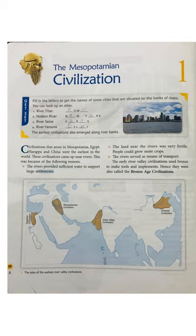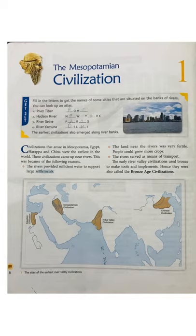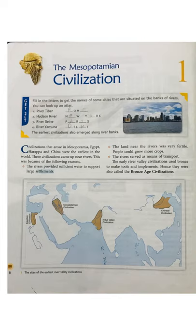Rivers also served as a means of transport — they transferred goods from one place to another using rivers. These civilizations also used bronze to make tools and other implements, so they are also called Bronze Age civilizations. They arose near rivers, so they are called early river valley civilizations, and because they used bronze to make tools, they are also known as Bronze Age civilizations.